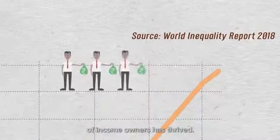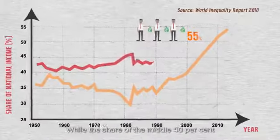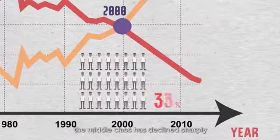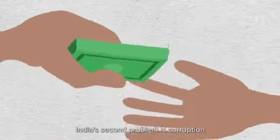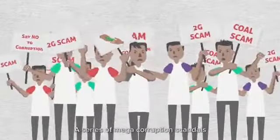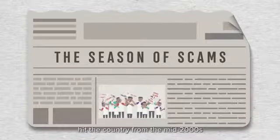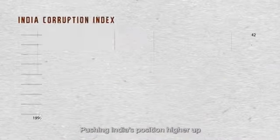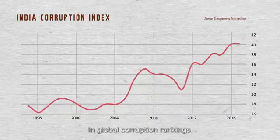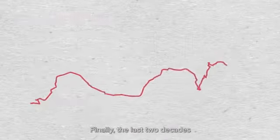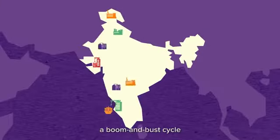Over the same period, India's top 10 percent of income owners has thrived, while the share of the middle 40 percent — the middle class — has declined sharply. India's second problem is corruption: a series of mega corruption scandals hit the country from the mid-2000s, pushing India's position higher up in global corruption rankings.